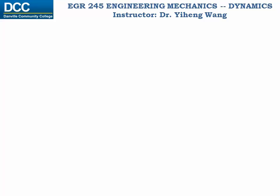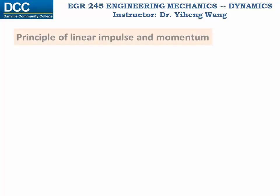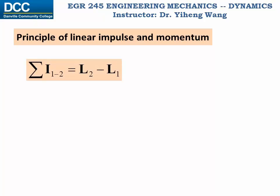The previous equation can now be written as the principle of linear impulse and momentum. The summation of I — the total linear impulse caused by external forces for the process from state one to state two — equals the change in the particle's linear momentum L. We emphasize the word 'linear' because we will learn about angular impulse and angular momentum later.